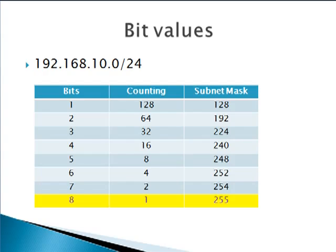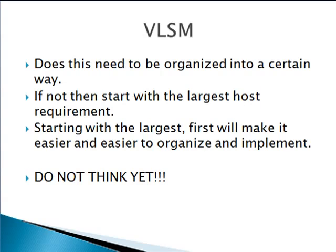Let's get into the variable length subnet mask. First thing you need to do is look at the problem and figure out if it's asking you to do something specific — if it's asking you to put LAN 1 on this subnet mask, LAN 2 on this subnet mask. If it does not tell you any specific requirements, the easiest thing to do is just start with whatever you need your largest host to be. Variable length subnet mask is a lot easier to do thinking from the host perspective, as opposed to trying to use network bits. So I always start with the largest host — it makes it easier to keep up with accounting.